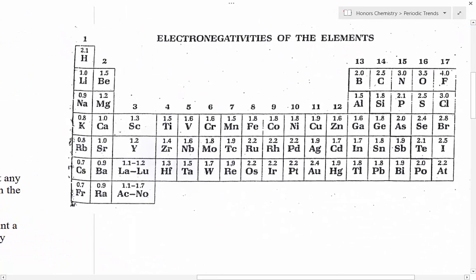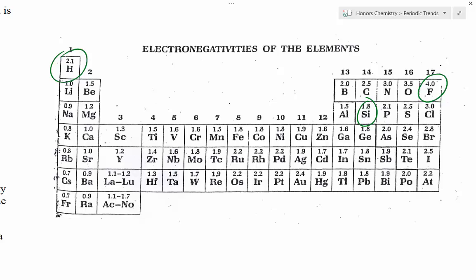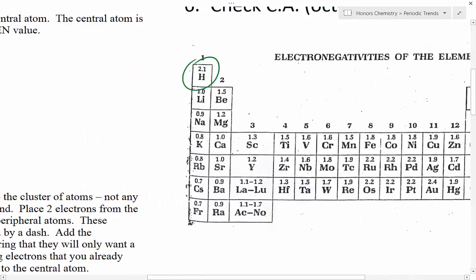If you have handy electronegativities at the elements table, you'll notice that all of these elements are going to have fairly high electronegativities, fluorine being very high. Now hydrogen is kind of annoying because sometimes it actually acts as a metal, but most often we're going to treat hydrogen like a non-metal. Hydrogen's electronegativity of 2.1 is kind of in the middle, so it can actually act as both.